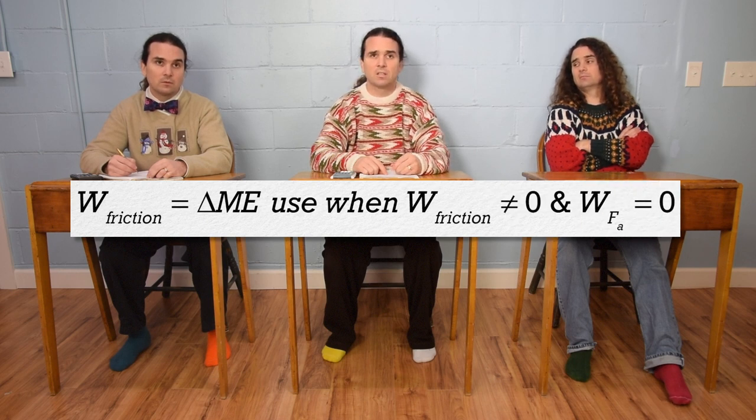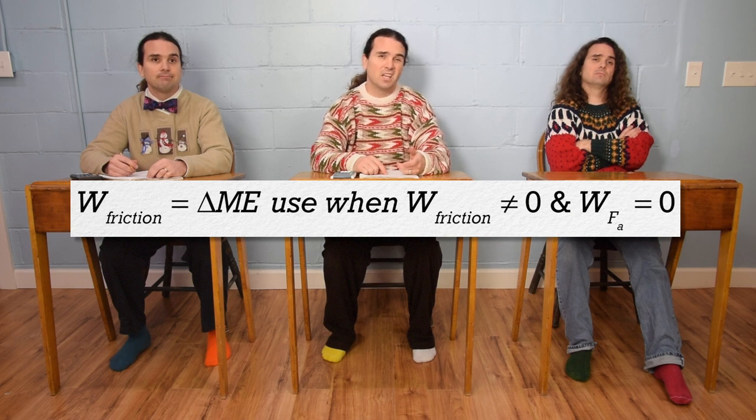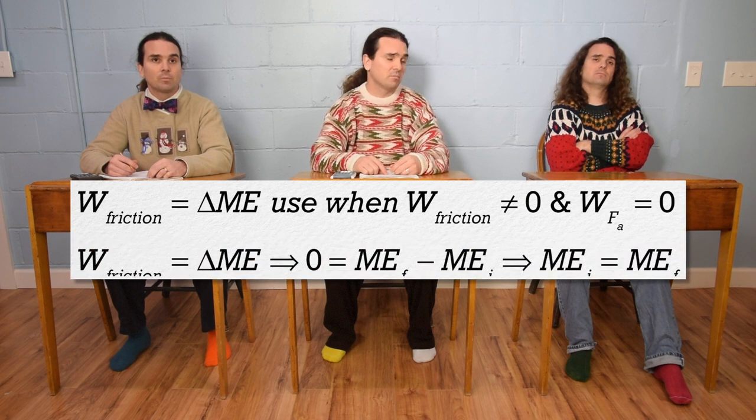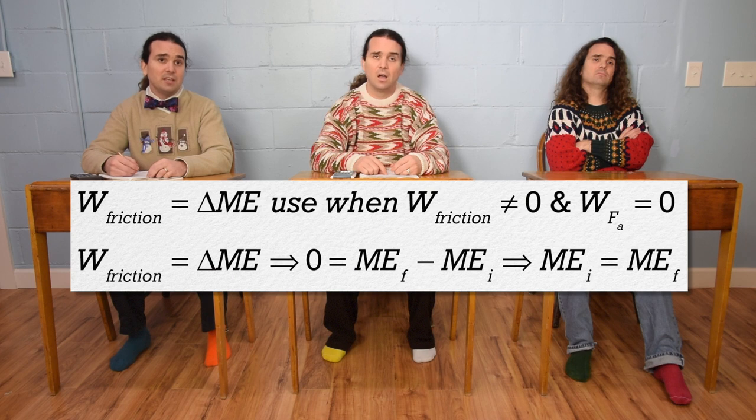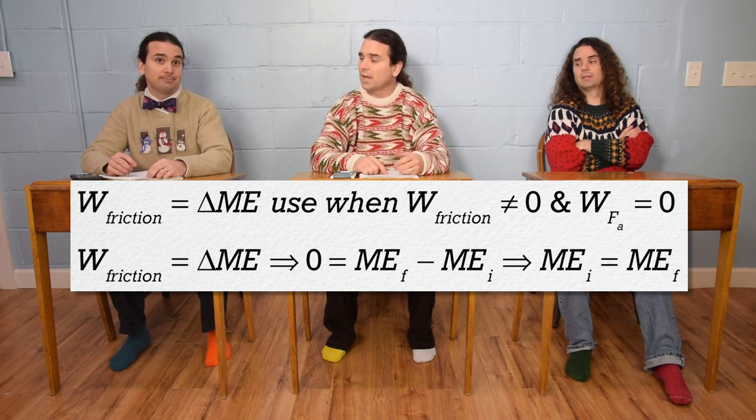Actually, even if the work done by friction is zero, we can still use this equation. It just works out to be conservation of mechanical energy. But it is easiest to think about it that we use work due to friction equals the change in mechanical energy when the work due to friction is not zero and the work due to the force applied is zero. Right.